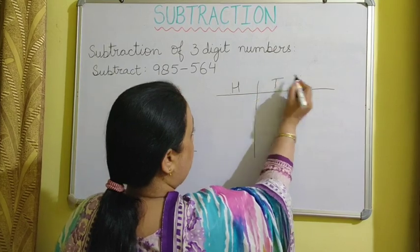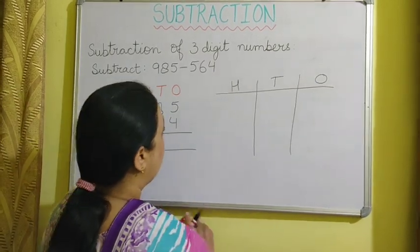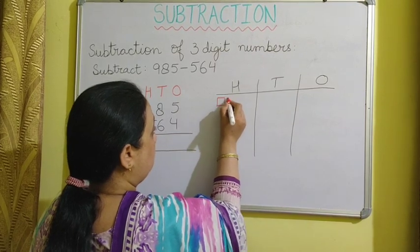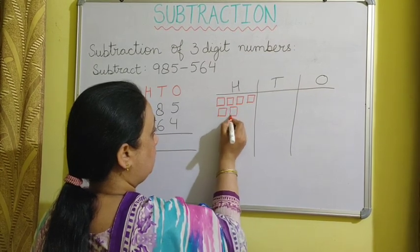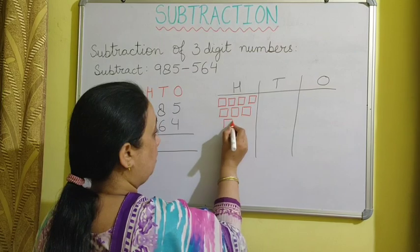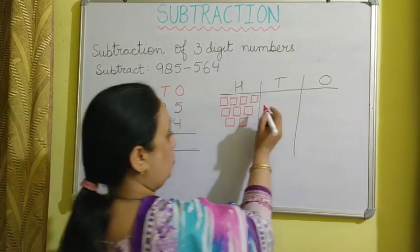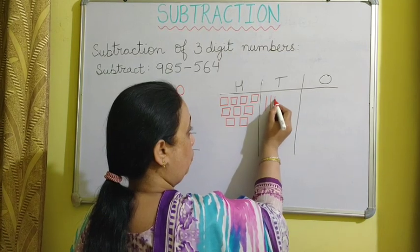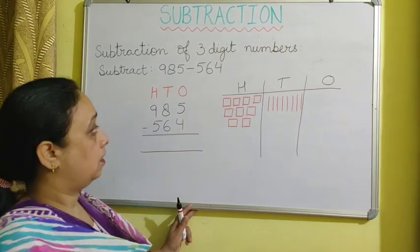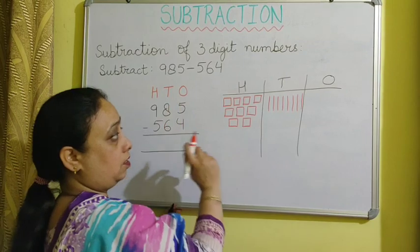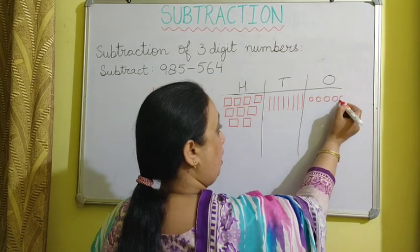I will show you how we take away the numbers using hundreds, tens, and ones columns. We have 900, so I draw 9 squares in the hundreds column. We have 8 tens, so I draw 8 lines in the tens column. Then we have 5 ones, so I draw 5 circles in the ones column.